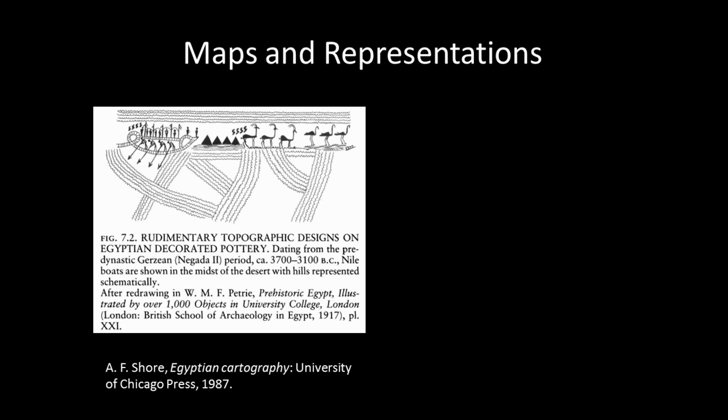Maps are one of the most common forms of representation. One idea about maps is that they are the spatial representation of the environment presented graphically. Keep in mind that many cultures throughout the world and throughout history have created many types of geographic maps and representations. For example, the image on the left shows a graphic design on ancient Egyptian pottery. Images such as these are interesting for reflecting how various cultures saw the world around them and how they represented their world.